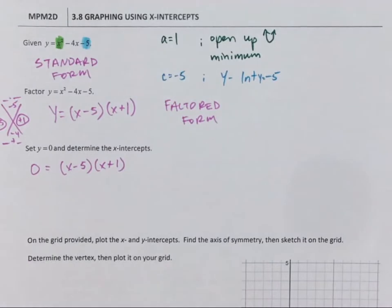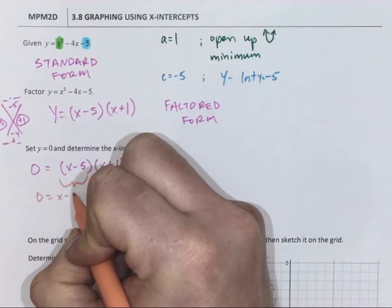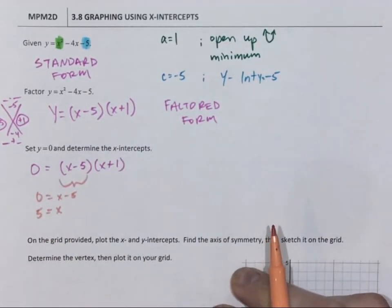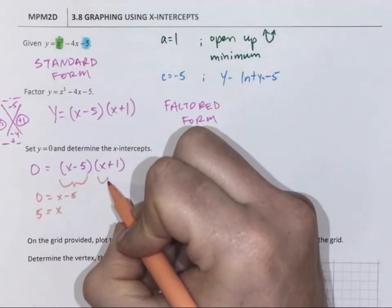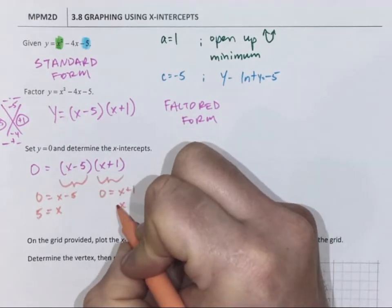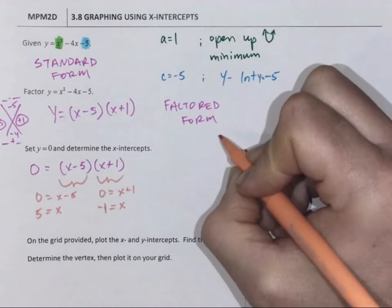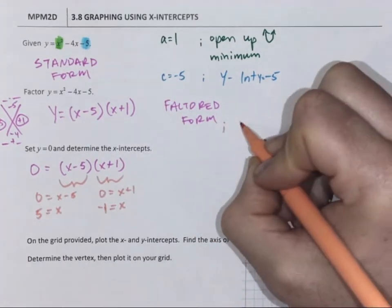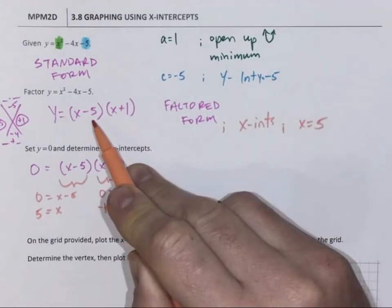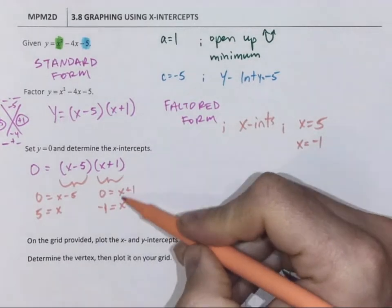So from that, we have the math to support it. 0 equals x minus 5, so x equals 5 as one x-intercept. And from this, the math to support it from that bracket, 0 equals x plus 1, so x equals negative 1 is my other x-intercept. So from factored form, I can remember my x-intercepts are x equals 5 and x equals negative 1. This is the math to support it.